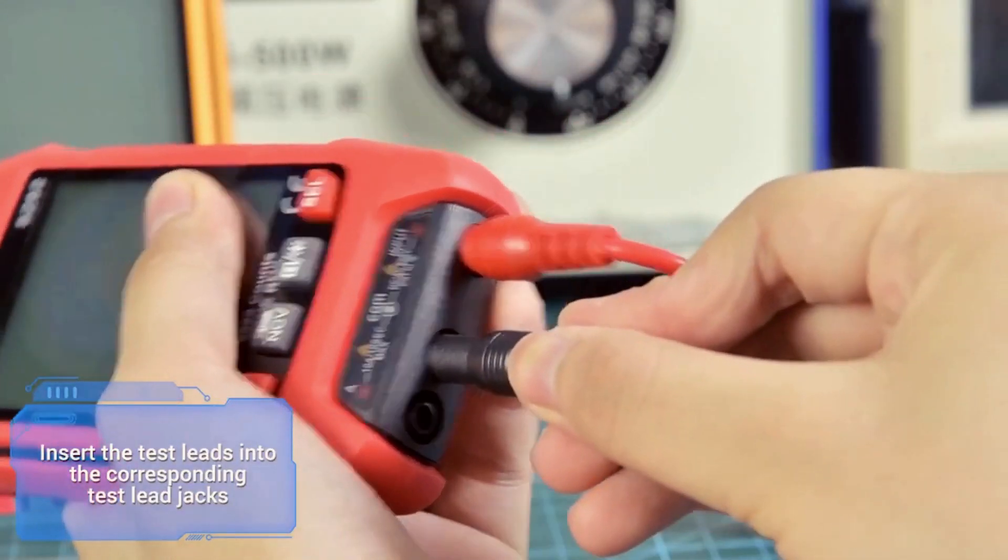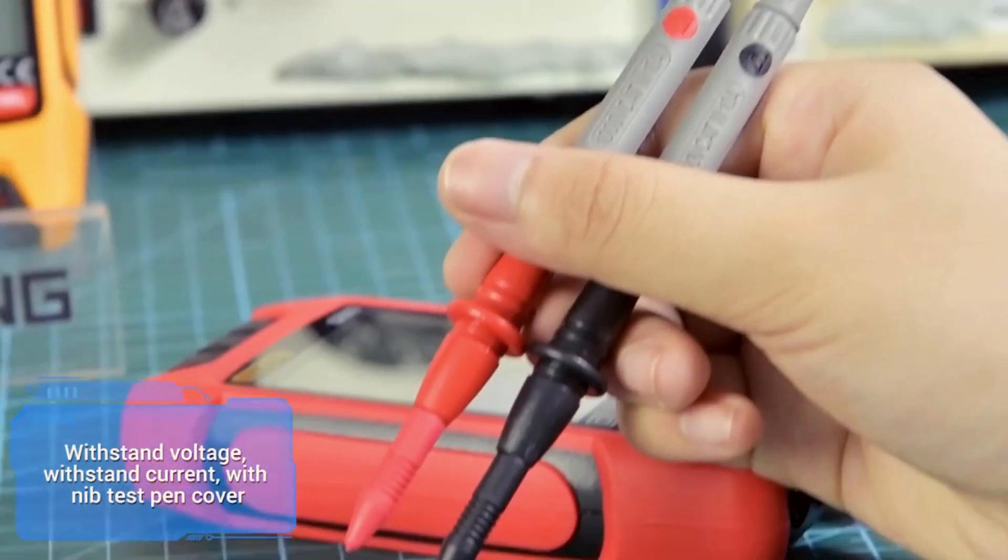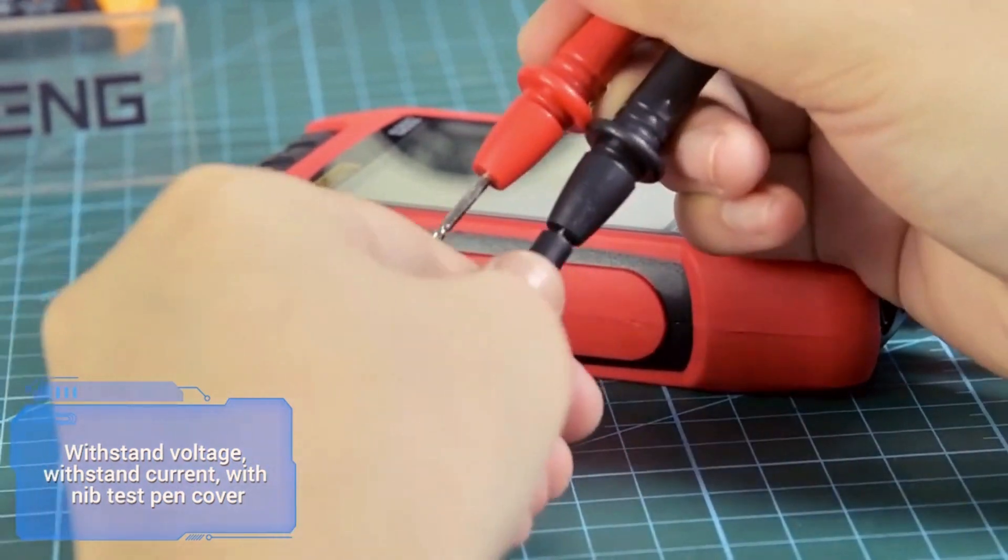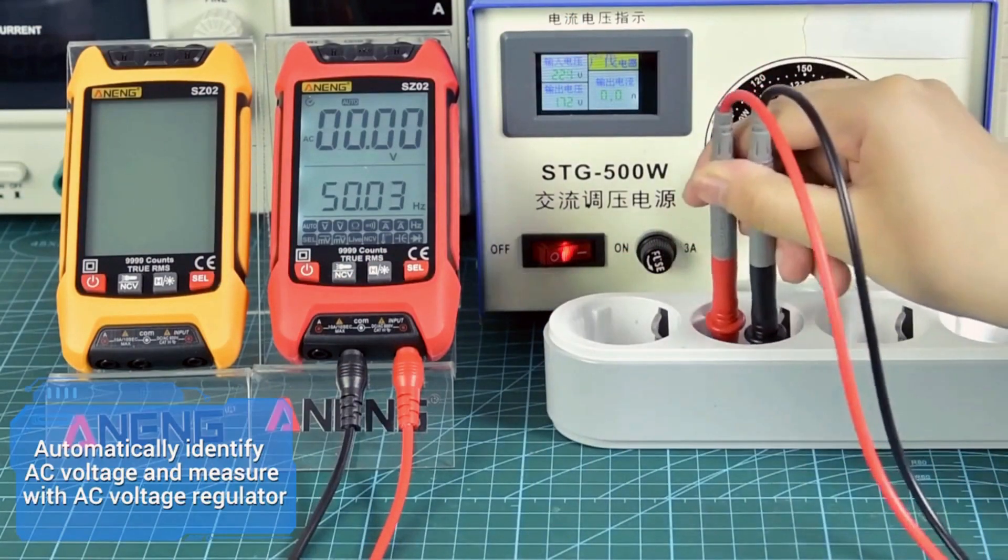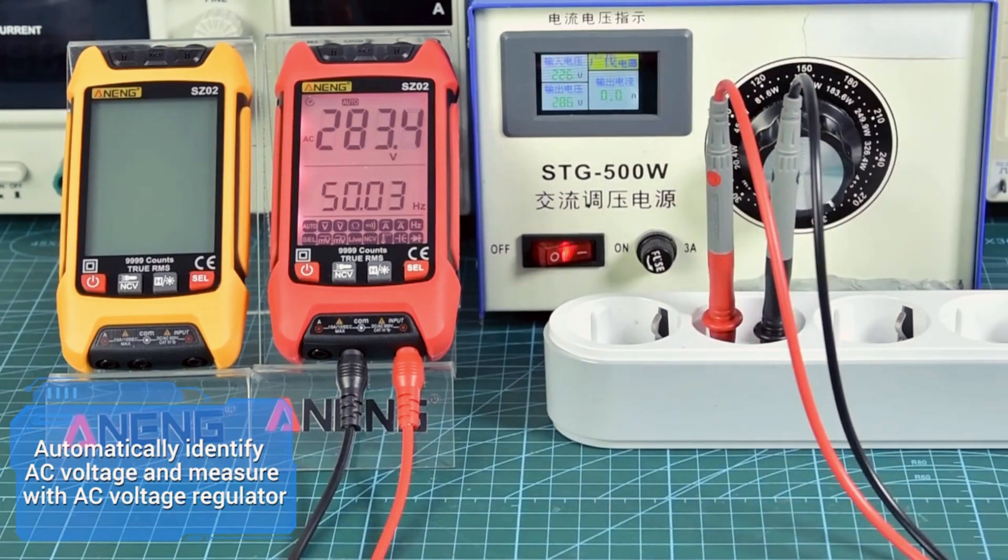The ANENGS Z2 Smart Digital Multimeter is a versatile tool that offers a wide range of functions for electrical measurements. With its 6,000 count display and true RMS capability,